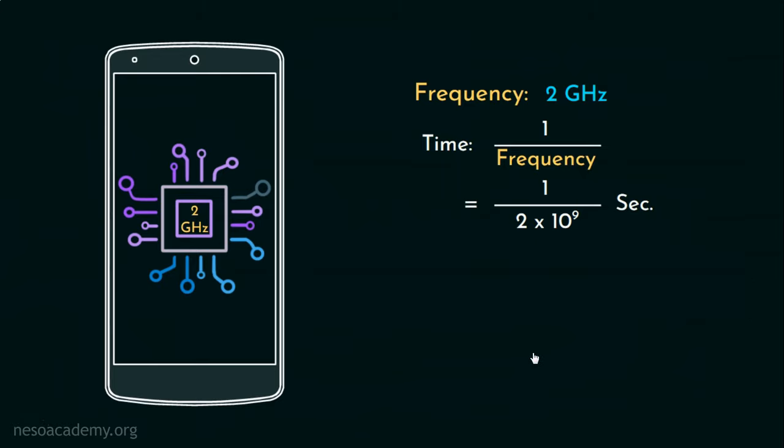Now, coming back to our initial illustration. 1 upon 2 into 10 to the power 9 seconds equals to 1 by 2 into 10 to the power minus 9 seconds. And 10 to the power minus 9 seconds is 1 nanosecond. Therefore, in half a nanosecond, our processor can perform a single task. So, to conclude, the CPU is fast. Not only fast, real fast.